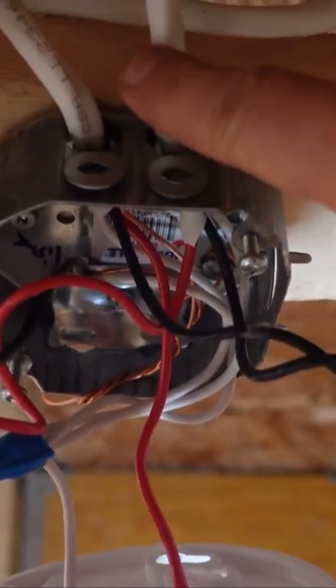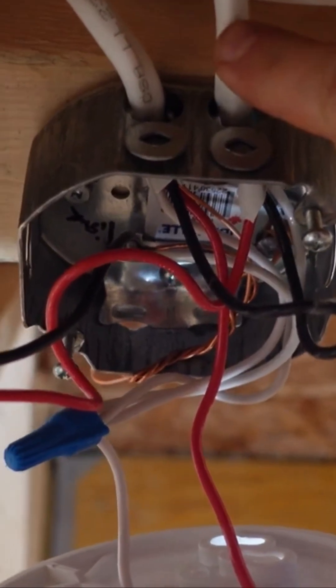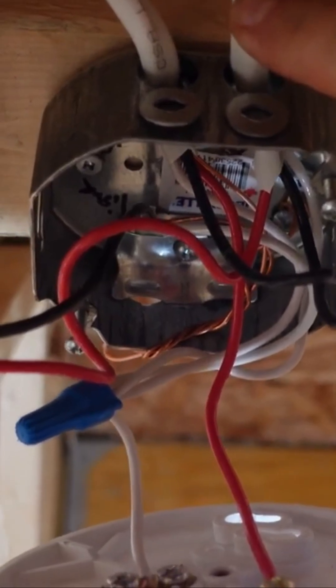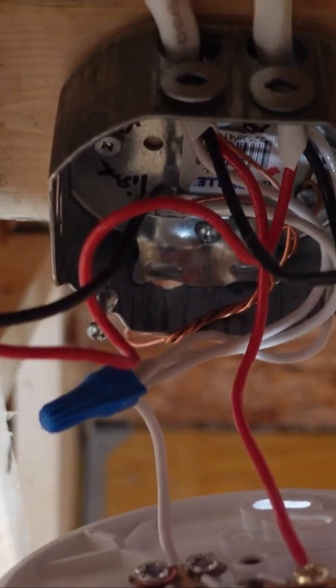So basically we have a three-wire which has the white, the black, the red and the ground coming up from our switch. From that we have going to another source.